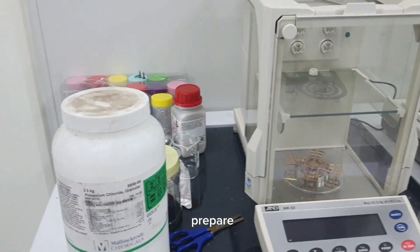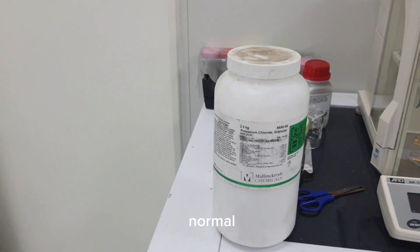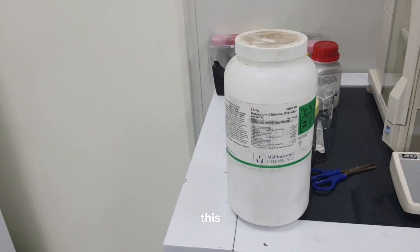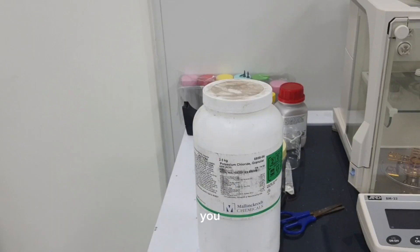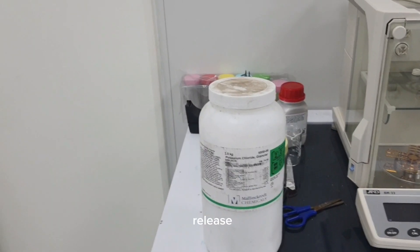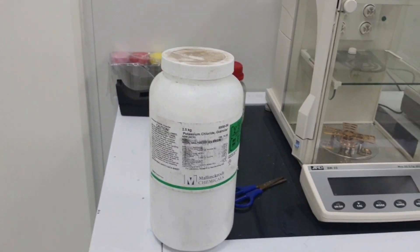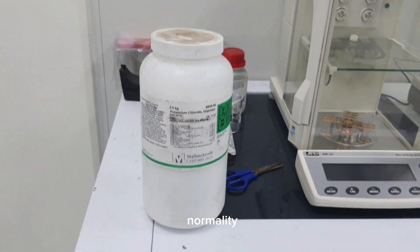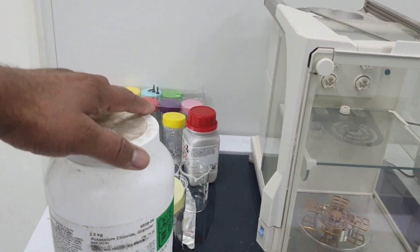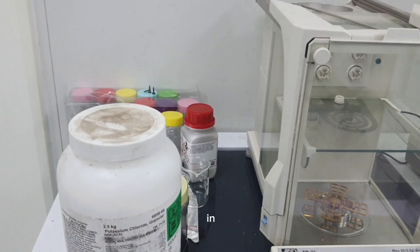We want to prepare one molar or one normal. Since this is monovalent, if it dissolves in water it will release potassium and chloride, so it will have the same molarity and normality.